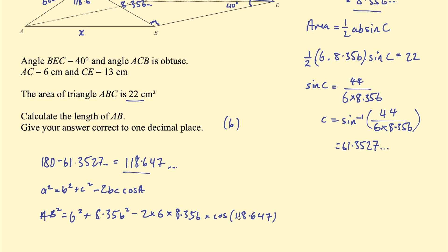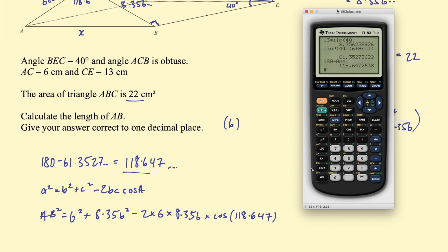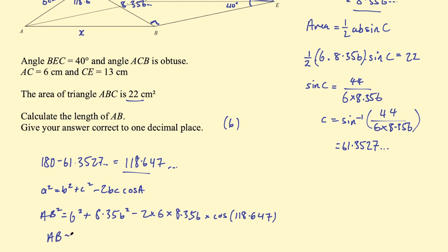So now let's go ahead and calculate that. Lots of calculator work in this question. So 6 squared plus 8.356, I should probably use more decimal places for that number. Oh, and I still have the number on my calculator, so let's go ahead and use a few more, six decimal places should be enough. And then we have subtract 2 times 6 times that number again, multiplied by the cosine of our previous answer using the answer key there to save time. And I get 153.9. Remember, that's AB squared, so we need to take the square root of that to find our length. So the square root is 12.405, but to one decimal place, it's going to be 12.4.